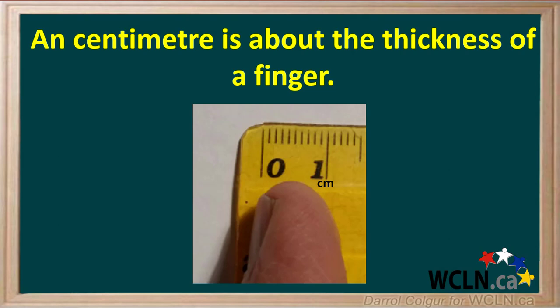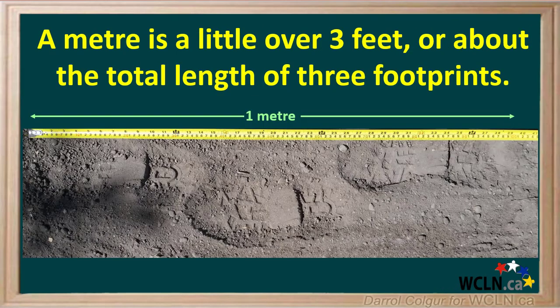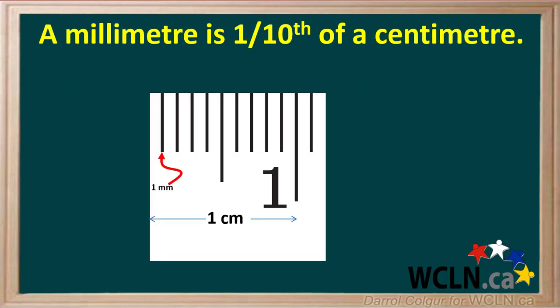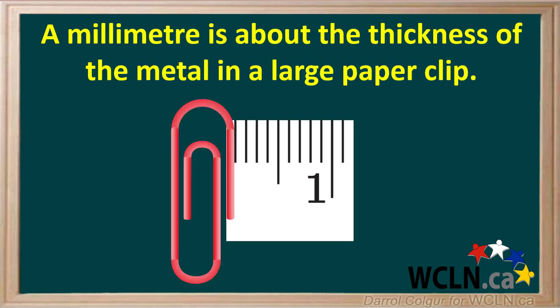A centimeter is smaller than an inch. It is roughly the thickness of a finger. A meter is a little over three feet, or roughly the total length of the three footprints shown here. A millimeter is one tenth of a centimeter, and is roughly the thickness of the metal in a large paper clip.